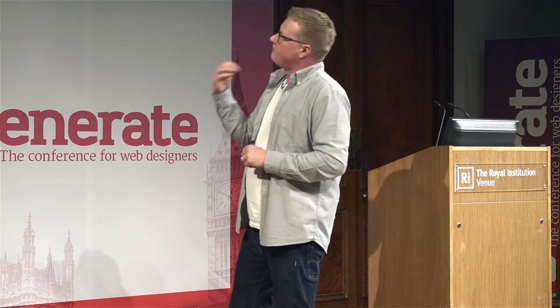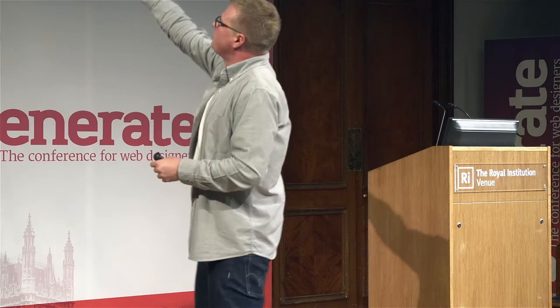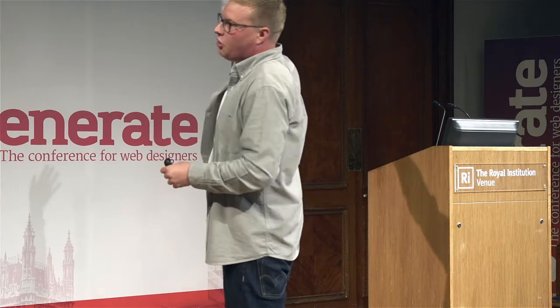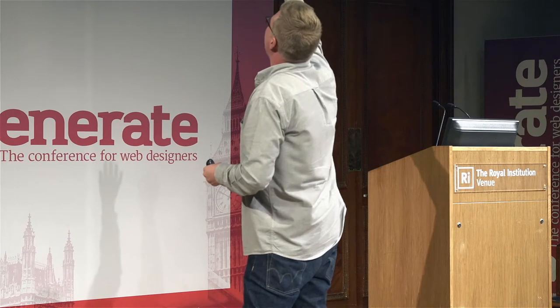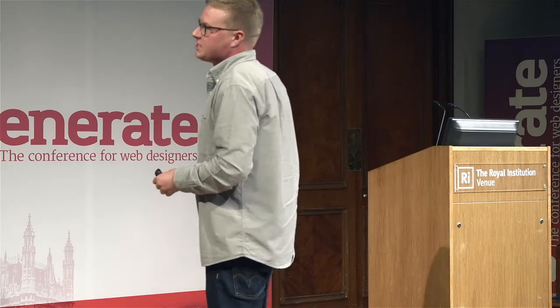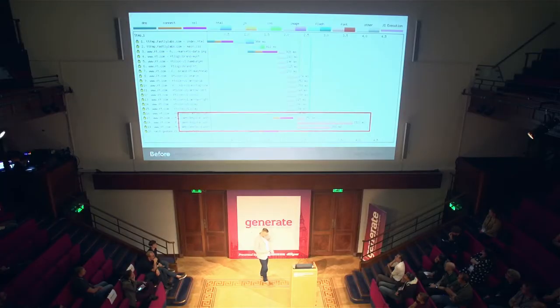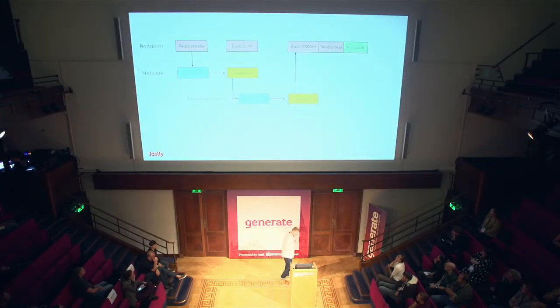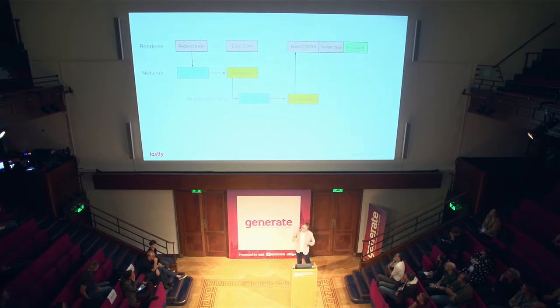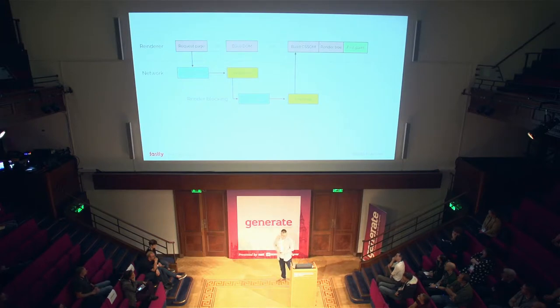Looking at our waterfall for ft.com: why, for a first meaningful paint on a news website where I came to read some text, are the fonts delivered so late in the process? All the way down here we've got about 10 images sitting in the way of the fonts, but the user only came to read some text. To understand this, we need to look at the browser's critical rendering path to work out what browsers are actually doing — why, even though the browser knows fonts are critical, is it requesting them so late?